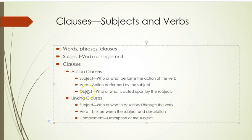In an action clause you can have an object, but you don't necessarily need to have one. I've de-emphasized direct and indirect objects because I have not seen students run into trouble because of objects, nor do they improve their writing by understanding them. So just know: with action clauses, the subject is who or what performs the action, and the verb is the action performed by the subject. They feed on each other.